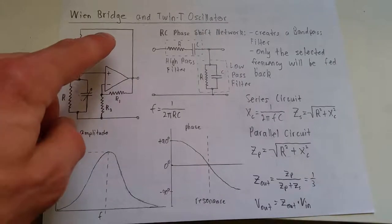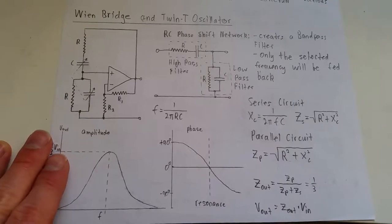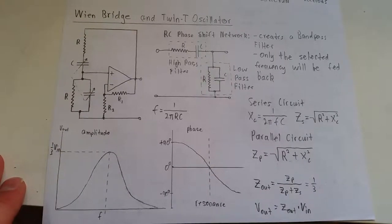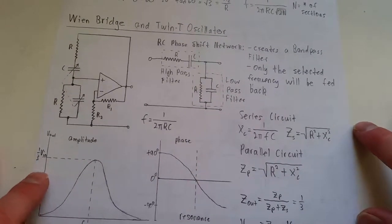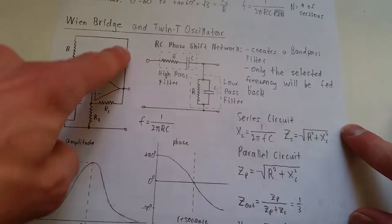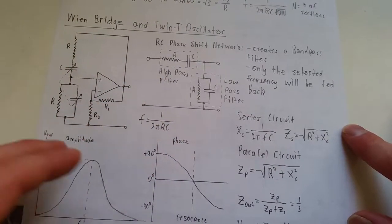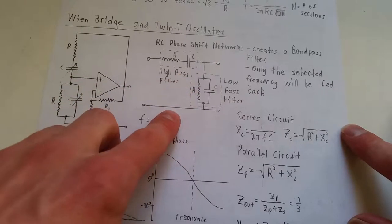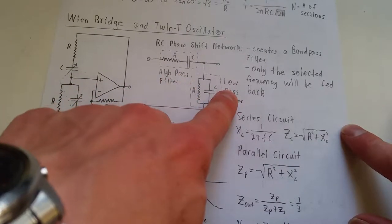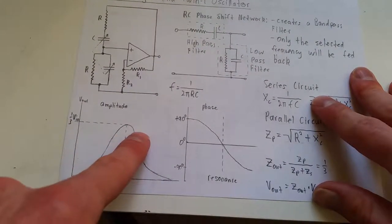Next up, we have the Wien Bridge and Twin T oscillator. These are so similar that they're pretty much within the same group. It's just the circuit's just a bit different. Basically, what you have here, is you have your normal positive feedback loop. Except, you have, effectively, two RC filters making a bandpass filter. You have a high pass filter and a low pass filter together. Such that you get a frequency response that is peaked in the middle.